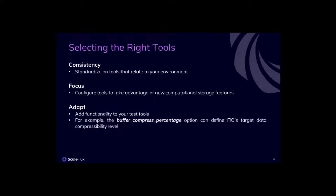Benchmarking tool selection should ideally follow the standard practice for your lab. If you switch tools to measure the impact of computational storage, it can make it challenging to compare benchmarking results accurately. Your focus should be on configuring the tool in the right way to evaluate the computational storage function. To evaluate transparent compression, your benchmarking tool must be able to generate data with varying entropy levels. Thankfully, this is an option in most popular IO benchmarking tools. For example, in FIO, the option buffer_compress_percentage allows you to define the exact compressibility level that you want to see in your test data, so you can match it to your production environment.